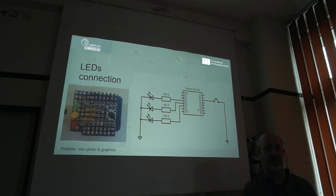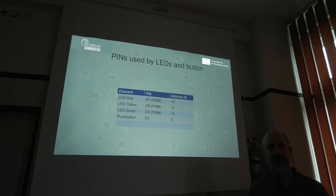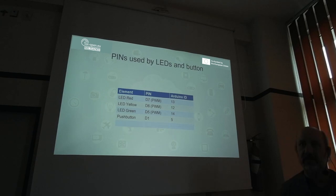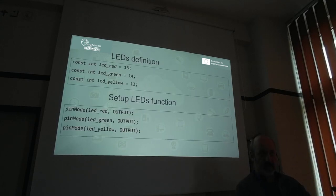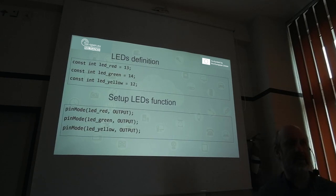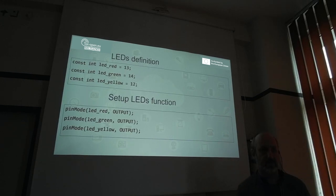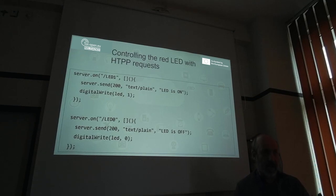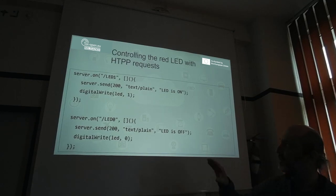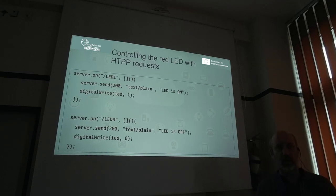Here is the specification of how the LEDs are connected. The red LED is connected to pin D7, which is Arduino pin 13. Yellow is pin 12, green is pin 14, and the push button is connected to input D1, numbered as 5 in Arduino. If we know how our LEDs are connected in hardware, we can configure them in software. We configure three integers representing the addresses of our LEDs and set all of them as outputs. We then add two server requests, LED_one and LED_zero, to control one of our LEDs.